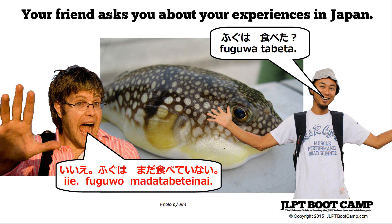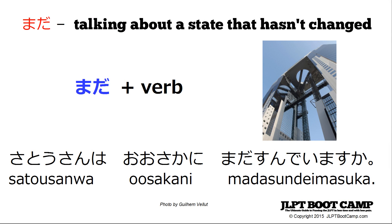The main thing to focus on is mo and mada. You use mada to talk about a state that hasn't changed. For example: Sato-san wa Osaka ni mada sundemasu ka? Sato-san is the topic, Osaka is the city, ni means 'in,' mada means 'still,' sunde is the te-form of sumu meaning to reside, imasu talks about the state of living in a particular place, and ka is the question-marking particle. So mada is used to talk about something that hasn't changed.